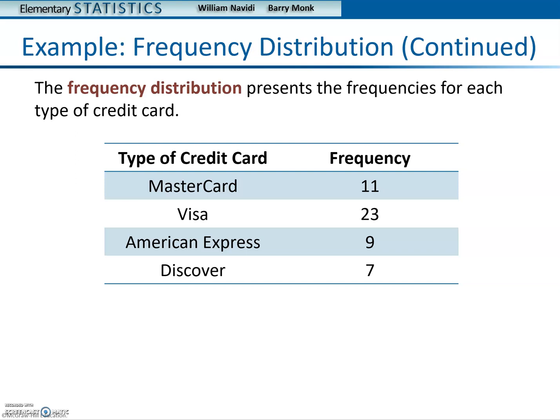The frequency distribution presents the frequencies for each type of credit card. So for instance, they used MasterCard, Visa, American Express, and Discover.